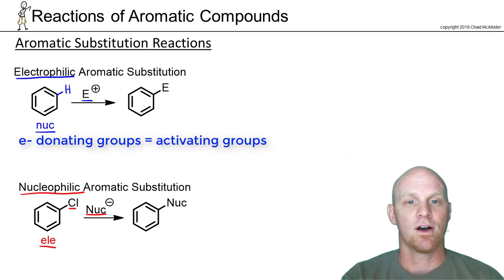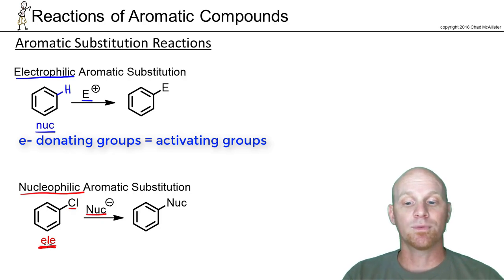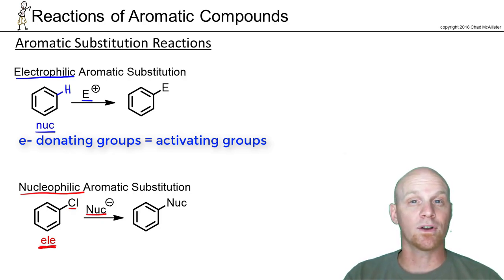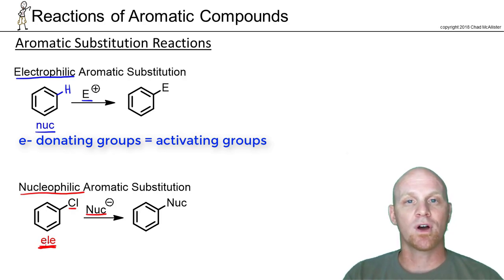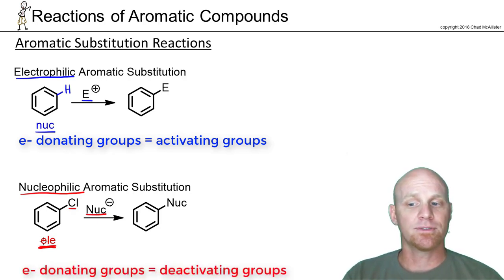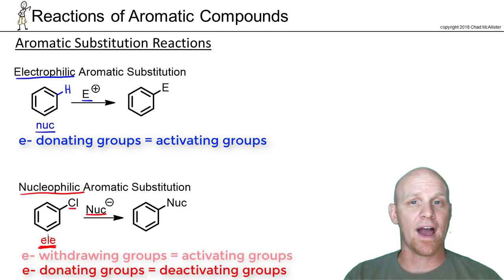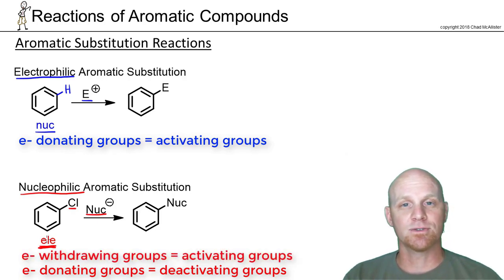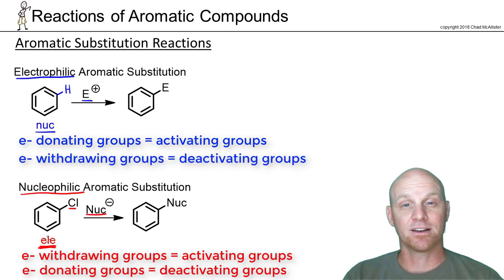In nucleophilic aromatic substitution, on the other hand, benzene is the electrophile. It turns out electron-donating groups actually make electrophiles weaker, not stronger. So in nucleophilic aromatic substitution, electron-donating groups become deactivating groups. For nucleophilic aromatic substitution, it's electron-withdrawing groups that actually increase the reactivity of electrophiles — so electron-withdrawing groups are activating groups in NAS, and they end up being deactivating groups in electrophilic aromatic substitution.